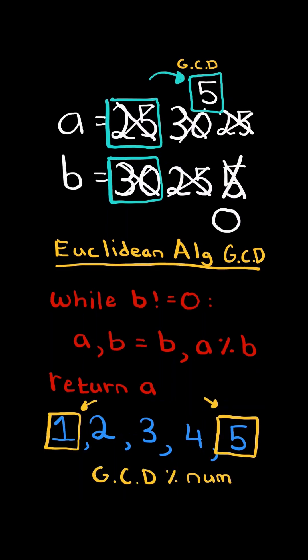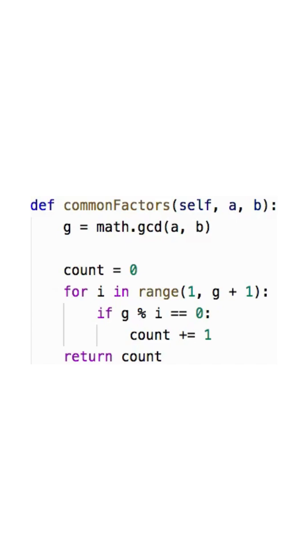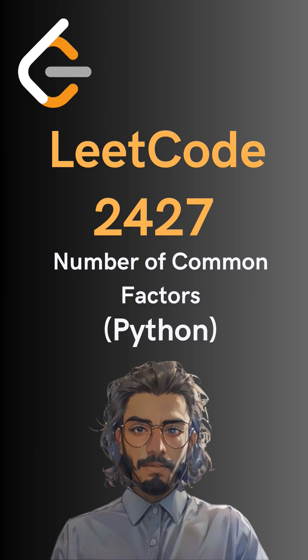In this case, both 1 and 5 divides the greatest common divisor, so we return the total number of factors to do. And here's the code to do so. Please like and follow for more.